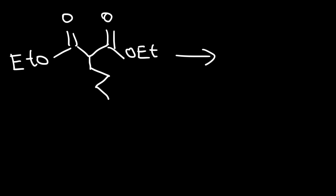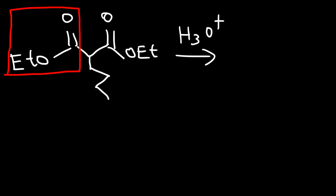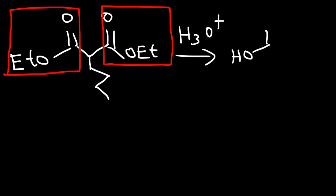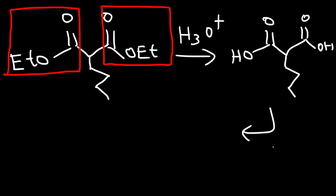Then in the next step, we're going to acidify the solution. Each of the ester functional groups that we see here will both be converted into a carboxylic acid. Now the next step is to heat the solution, and so decarboxylation will occur — we can get rid of one of the carboxylic acid functional groups.